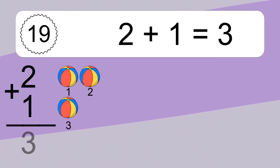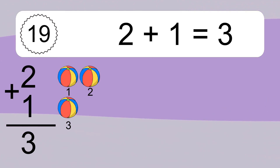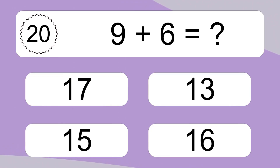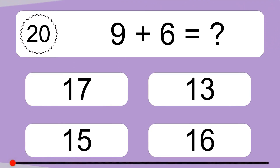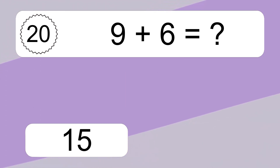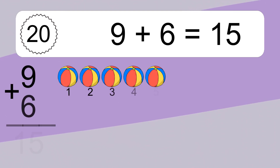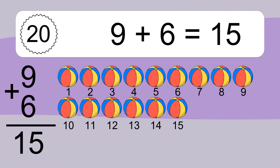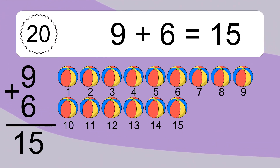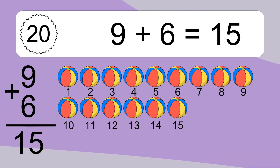2 plus 1 equals what? 2 plus 1 equals 3. Let's count it. 1, 2, 3. 9 plus 6 equals what? 9 plus 6 equals 15. Let's count it. 1, 2, 3, 4, 5, 6, 7, 8, 9, 10, 11, 12, 13, 14, 15.